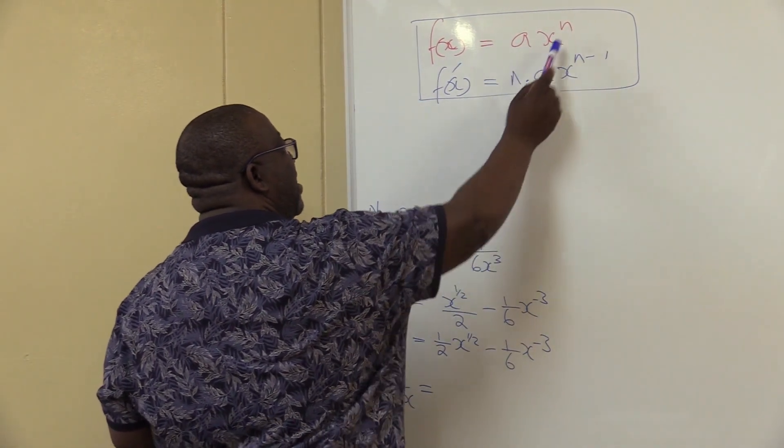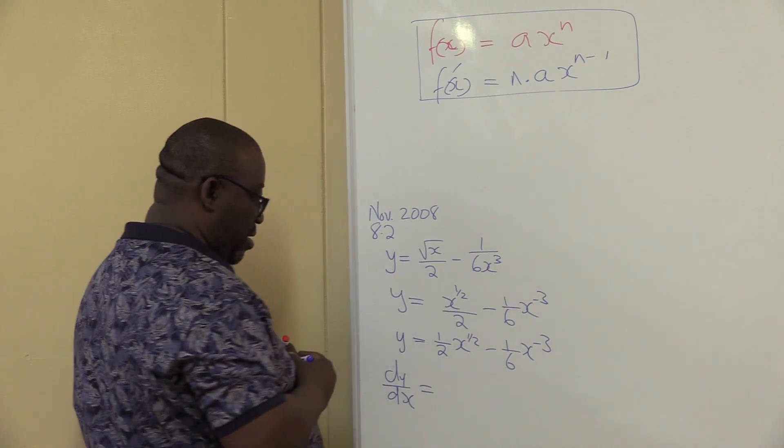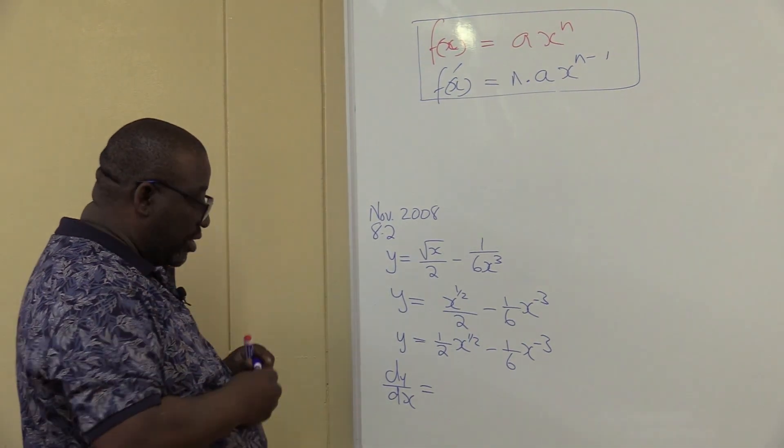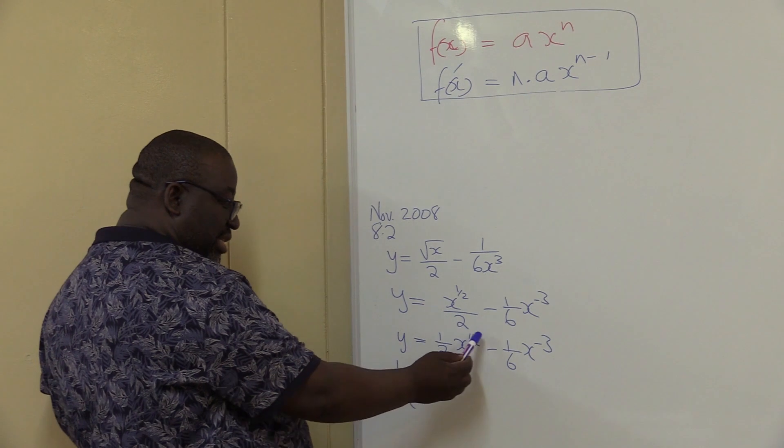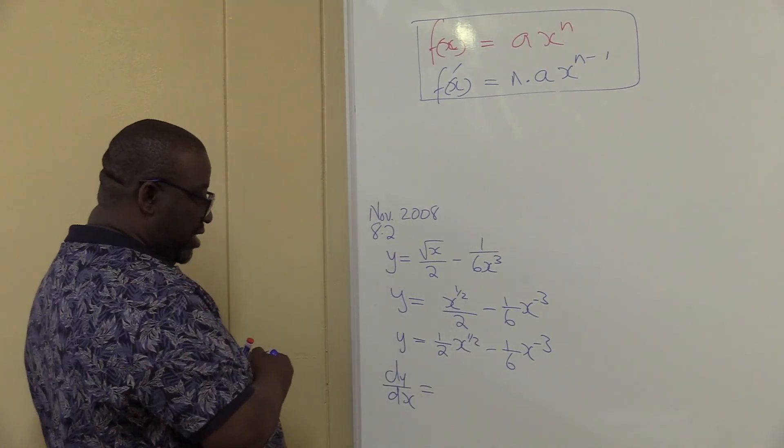Take this, you multiply it this side, then you subtract 1 there on the exponent. That's what we are doing. So in other words, we're going to take this, multiply it to this side, and subtract 1 there. Let's do this thing.